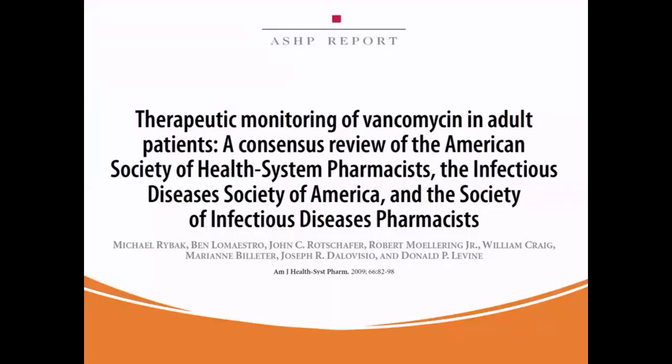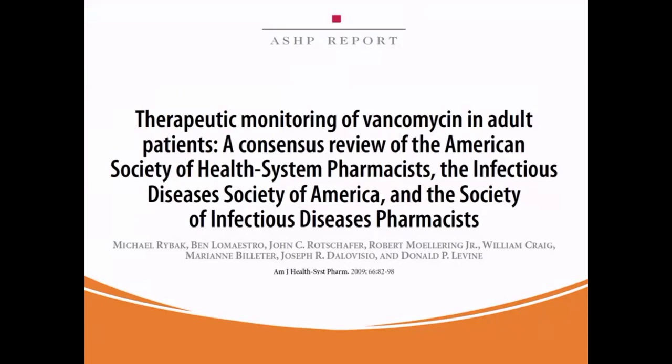Looking back, the first consensus guidelines for therapeutic monitoring of vancomycin in adults appeared in the AJHP in 2009, and it's worthwhile taking a quick look back at them to see what they recommended. There were a number of recommendations in these guidelines, and I'm sharing three of the ones I think are most important to our discussion today.